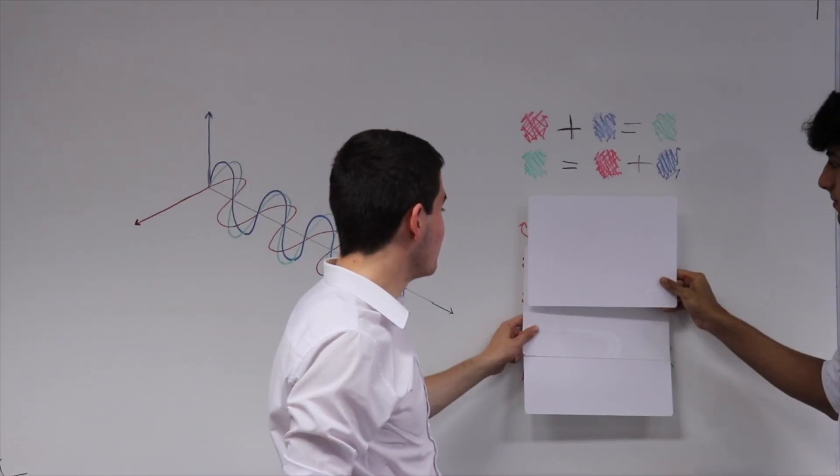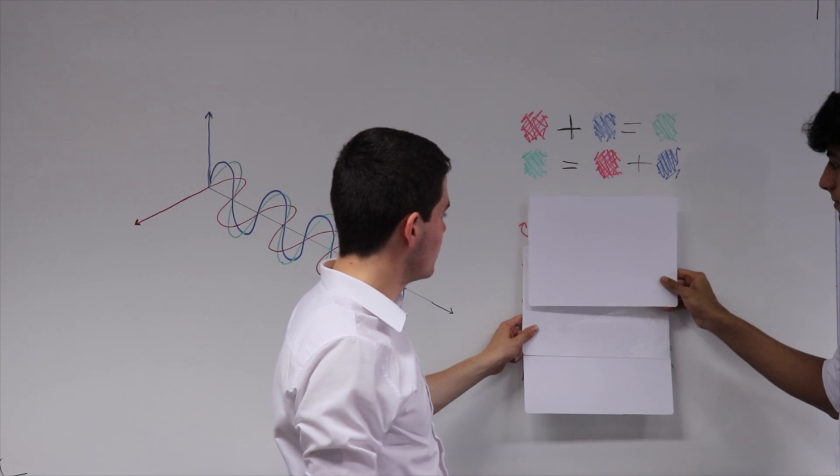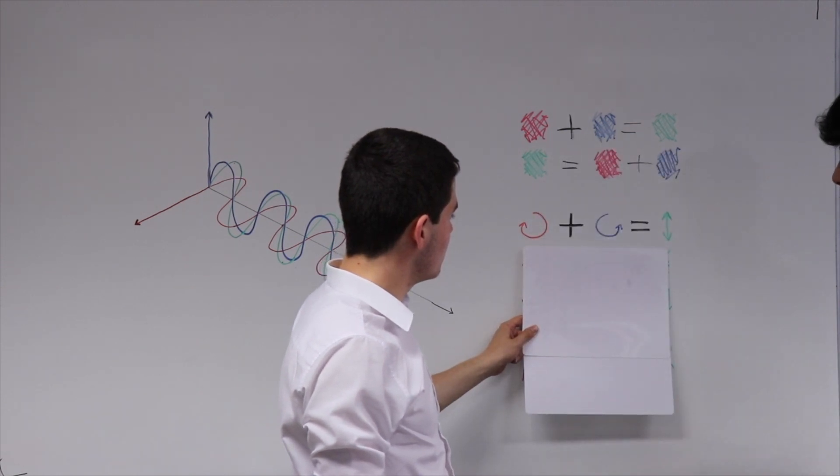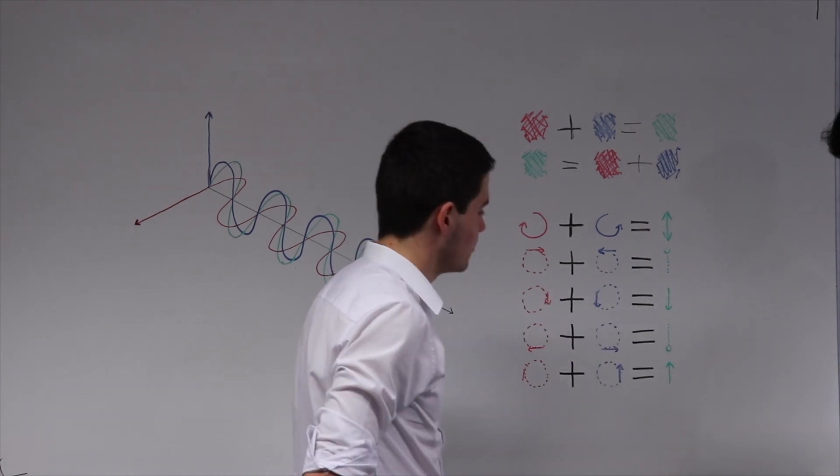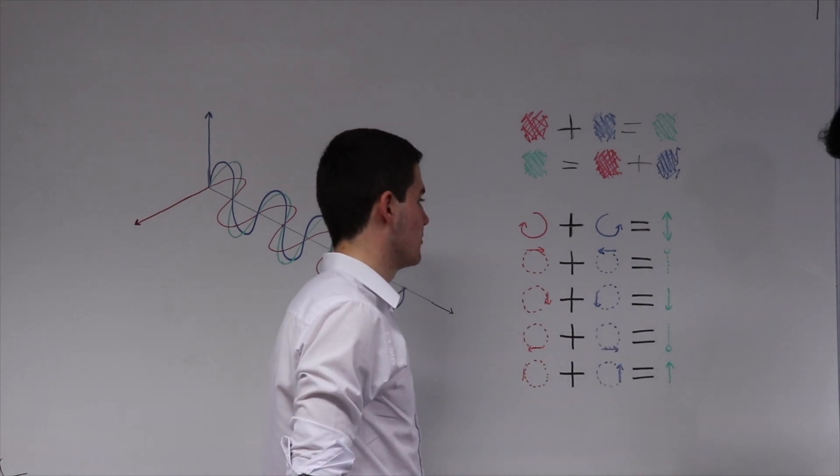Light can be said to be polarized when all the photons are oscillating in the same orientation. So if we imagine two circularly polarized light waves, these interfere to form one linearly polarized light wave, as demonstrated in the diagram.